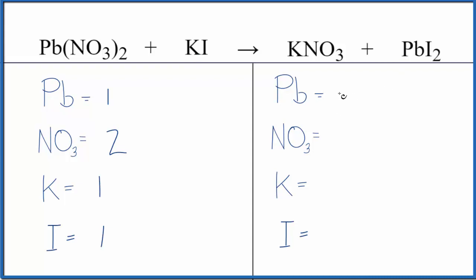Product side, we have our one lead, and then we have just one nitrate here, one potassium, and then two iodine atoms. So it's a lot neater, a lot crisper when we do it this way.